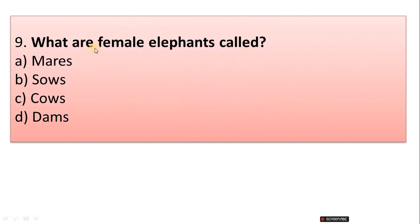Question 9: What are female elephants called? A. Mare, B. Sow, C. Cow, D. Dam. Correct answer is option C, Cow.